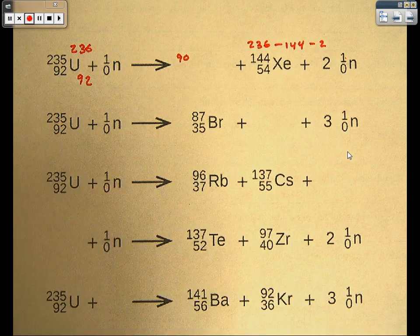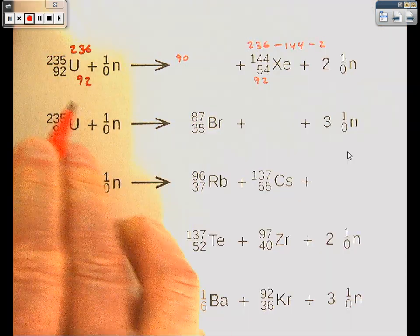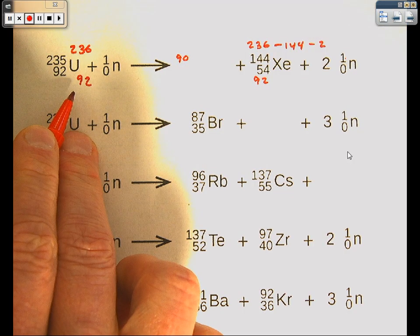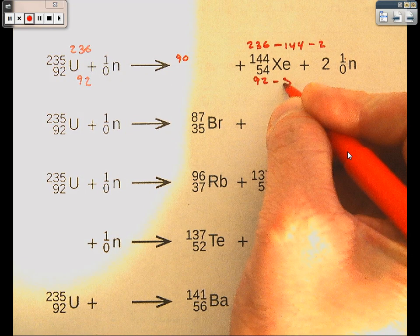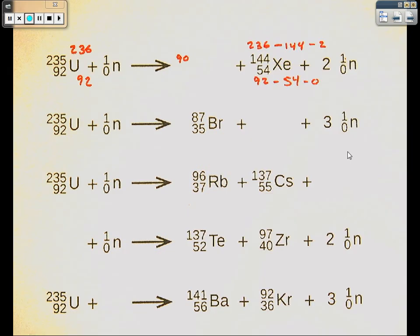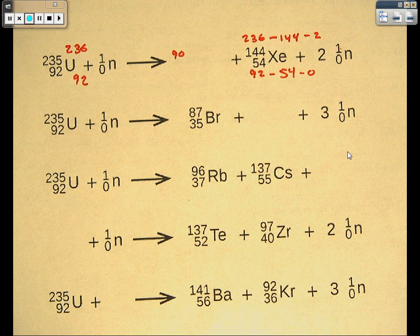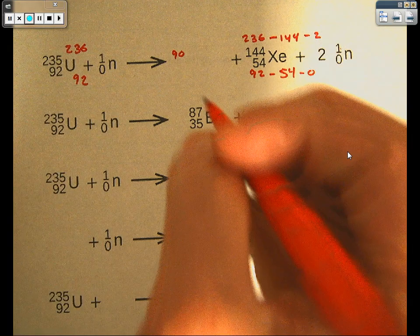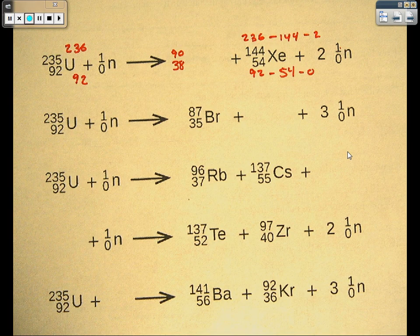We'll do the same thing with the atomic number. We'll start with 92, the mass from the starting side. Subtract out the 54 from the xenon. And 0, 2 times 0 for the neutrons. So 92 minus 54 minus 0 is 38. That's the atomic number of our missing substance.